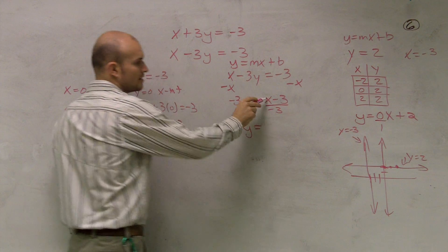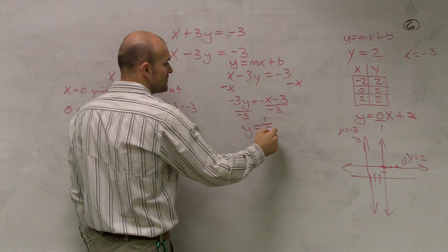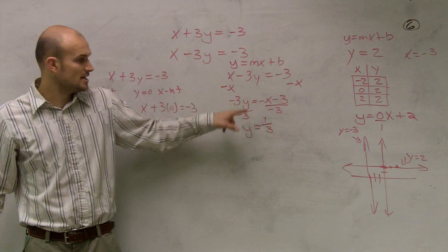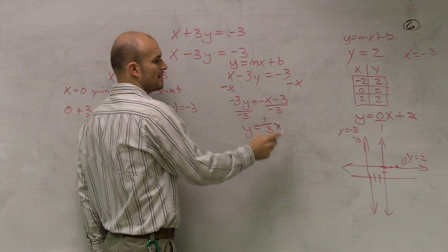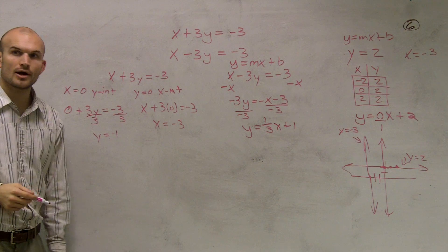Therefore, I get Y equals negative X divided by negative three is going to be a positive one-third, right? Because we can say there's a one in front of that X. So I'll be left with a one-third X. Negative three divided by negative three is going to give me a positive one.